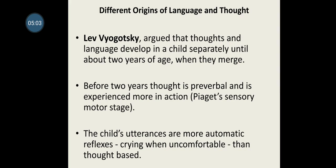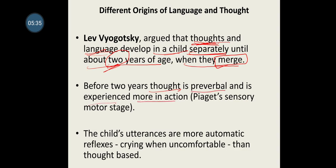Different origins of language and thought: Lev Vygotsky argued that thoughts and language develop in a child separately until about two years of age, when they merge. Before two years, thought is pre-verbal and is experienced more in action. This is very similar to Piaget's sensorimotor stage.